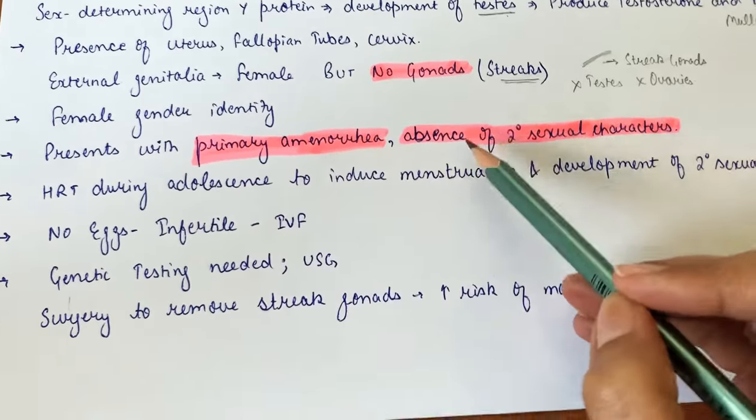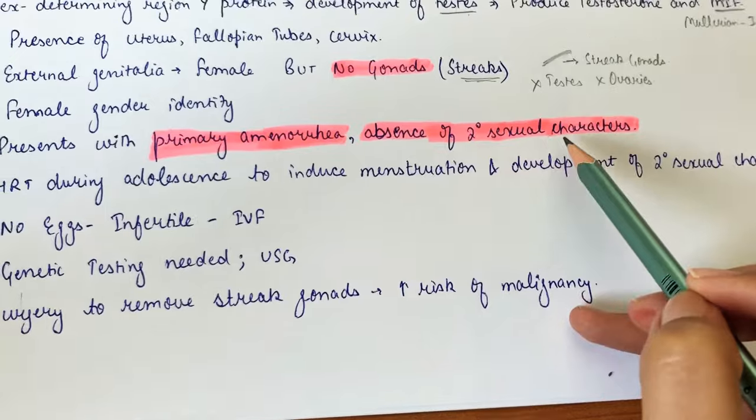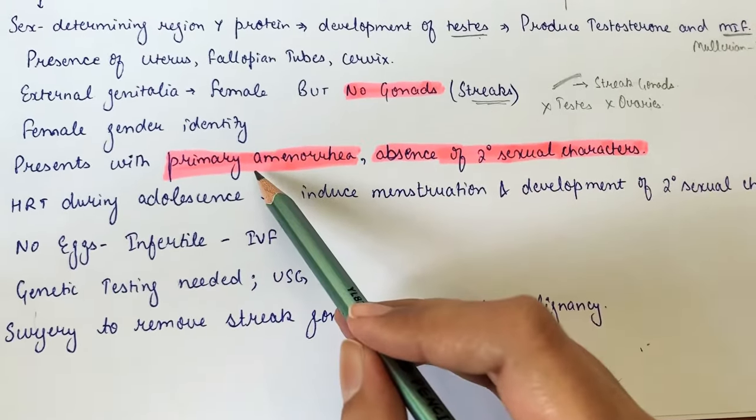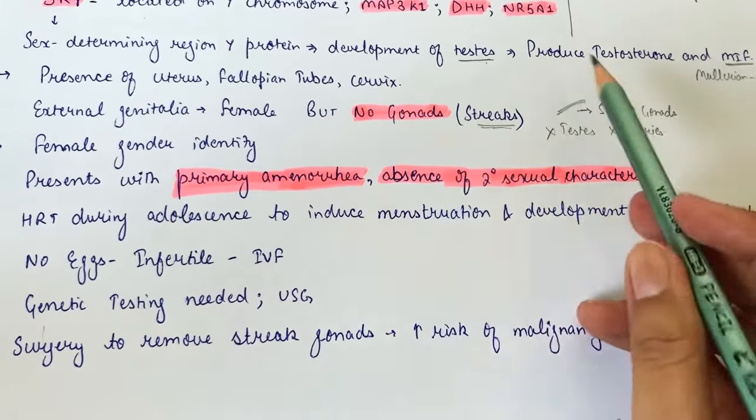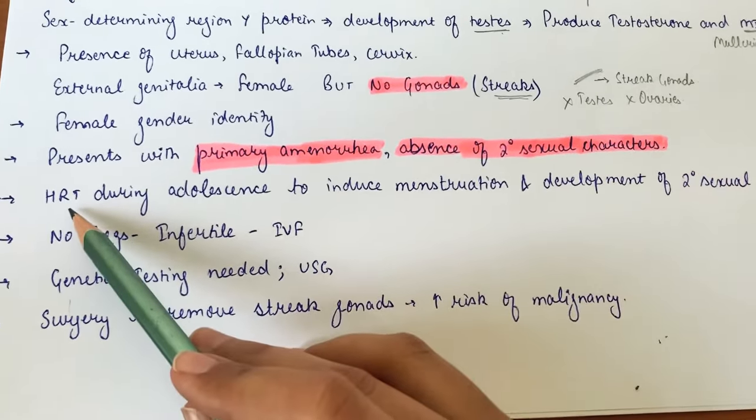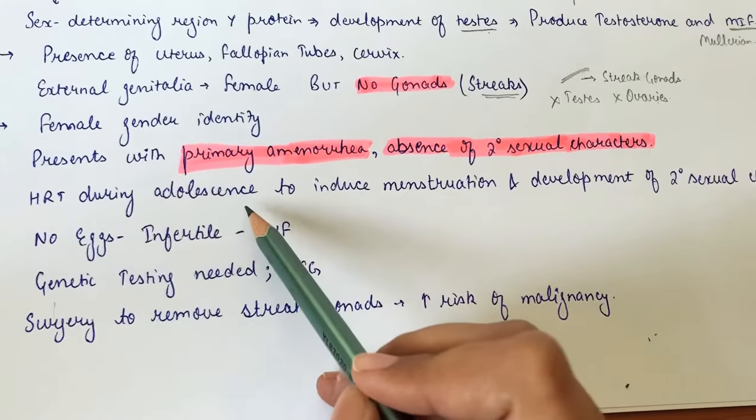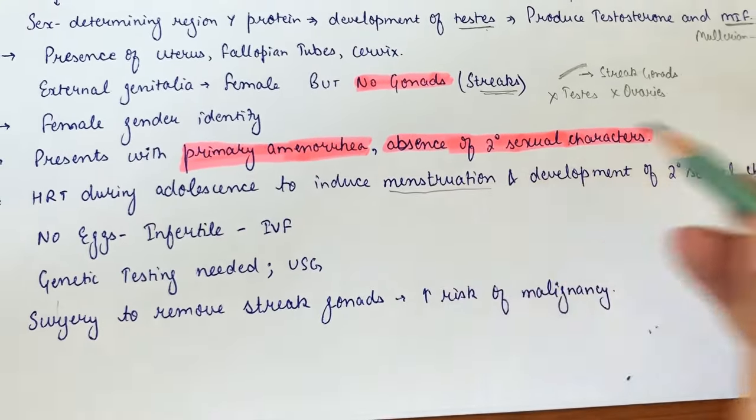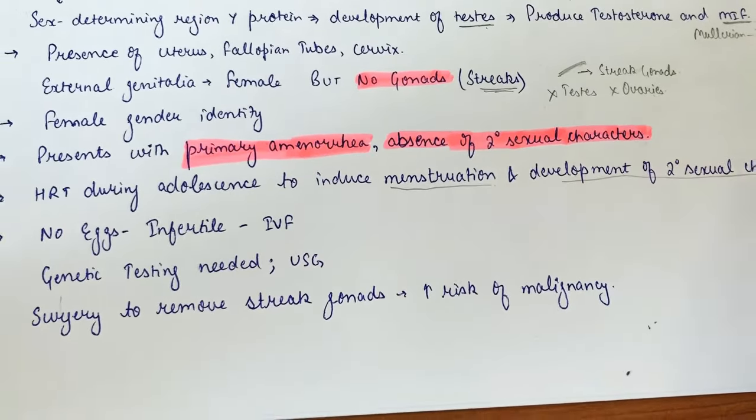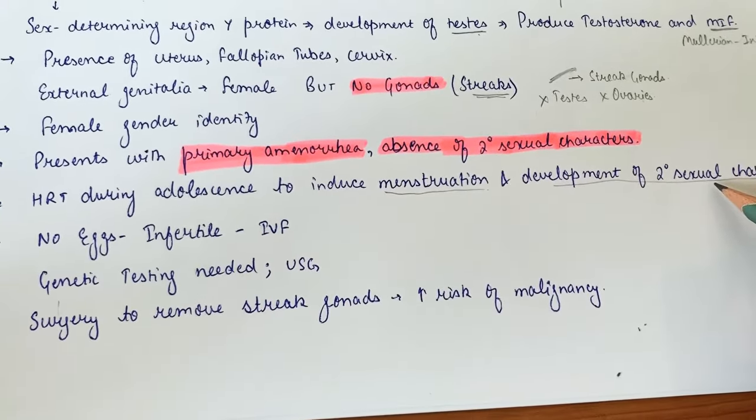These symptoms develop because without gonads, there is no estrogen or testosterone production. Hormone replacement therapy during adolescence is necessary to induce menstruation and development of secondary sexual characteristics, such as breast development, pubic hair, and axillary hair.